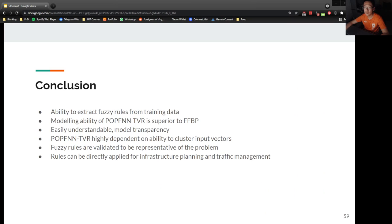To conclude the paper, we saw how the proposed method can extract fuzzy rules from training data and generalize approximately given new input data, with a modeling ability comparable or superior to that of FFBP. The POPFNN-TVR system also provides model transparency in the form of explicit knowledge rules extracted from training data. The results obtained also show that the performance of POPFNN-TVR is highly dependent on the ability to cluster input vectors, as failure to do so will result in a significant drop in system performance. The fuzzy rules extracted are validated to be representative of the problem and can be directly applied without further training or complex implementation.